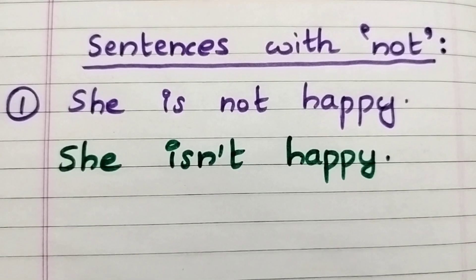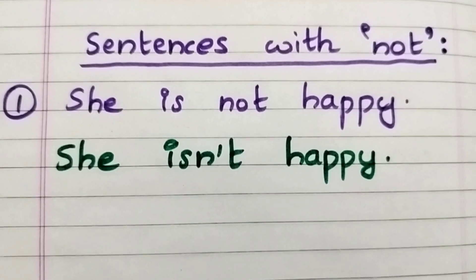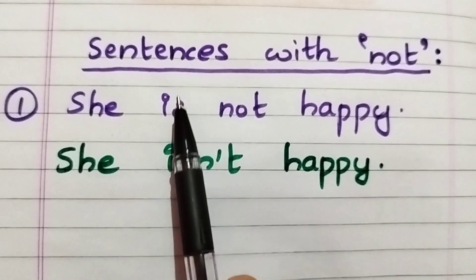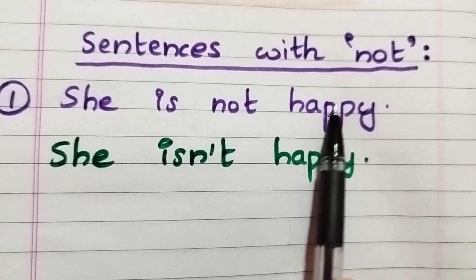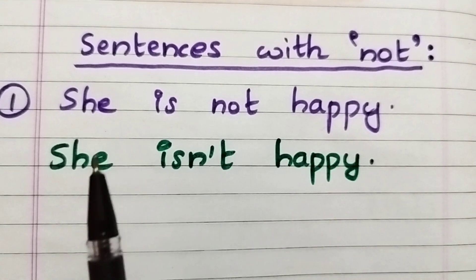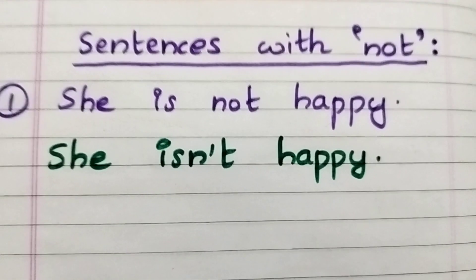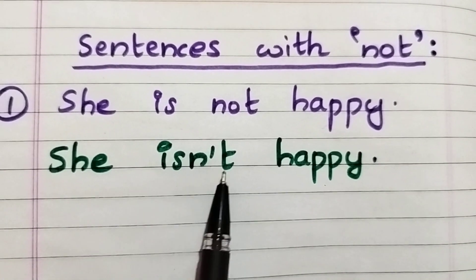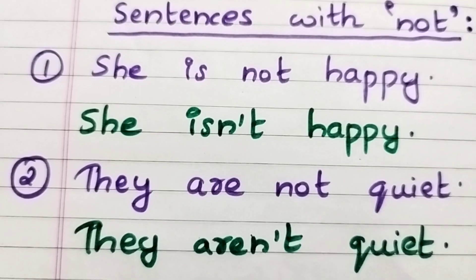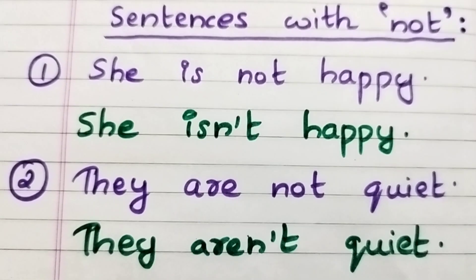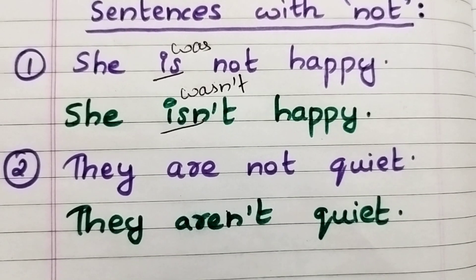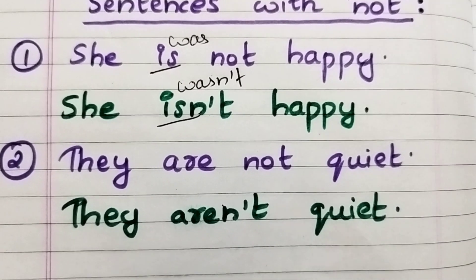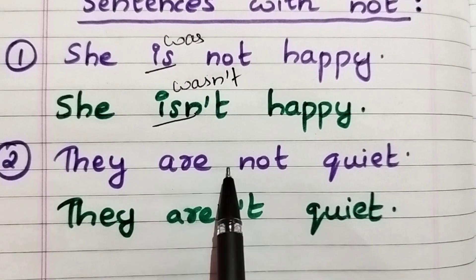Here are examples of sentences with 'not': 'She is not happy,' which can also be written as 'She isn't happy.' You could also use the past tense: 'She was not happy' or 'She wasn't happy.'